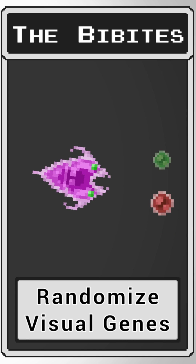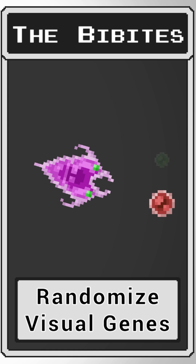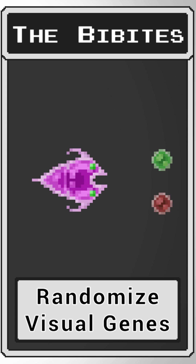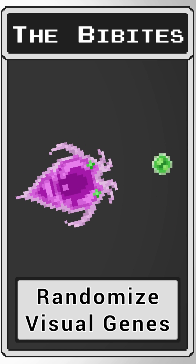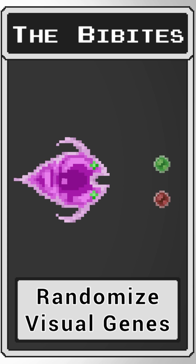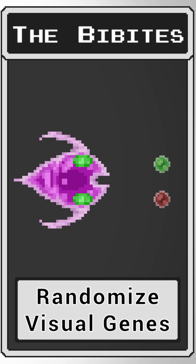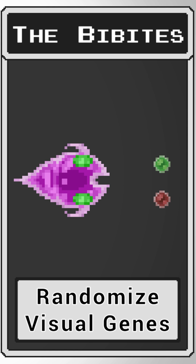Their mouth is used to represent their diet, from herbivorous to carnivorous, their eyes placement and size influencing their field of view, and arms being analogous to their speed.